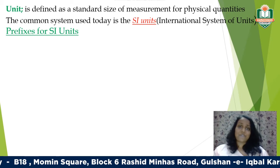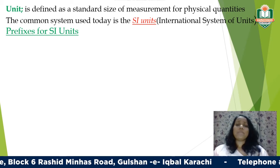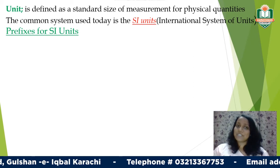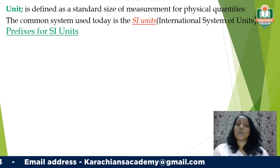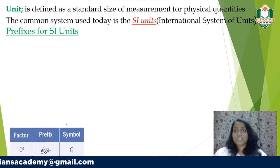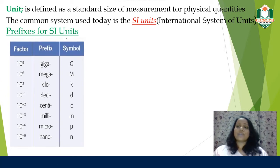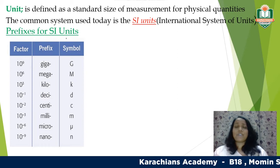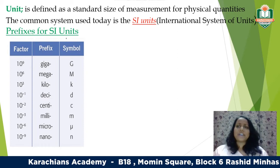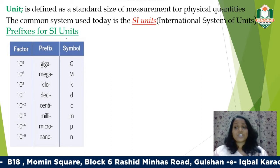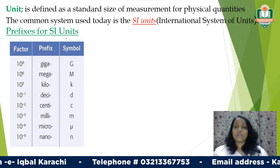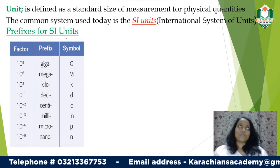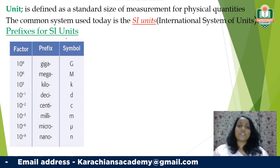SI units are fixed and standardized — one meter represents the same length everywhere, and one kilogram represents the same mass worldwide. We also use prefixes with SI units to make calculations easier. For very small measurements, like the length of a bacterium, or very large distances, like the diameter of the Earth, writing out all the digits is impractical, so prefixes are used instead.